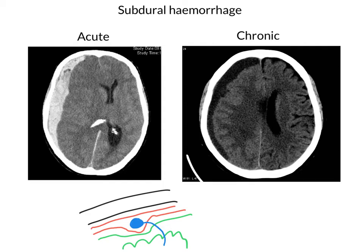There are two types of subdural hemorrhage. On the left we've got the acute subdural hemorrhage and on the right the chronic. You can tell the difference between these by the appearance of the blood. In the acute situation, the blood appears white on a CT scan, whereas in the chronic situation, the blood has been resorbed and changed by various metabolic processes and it becomes black. So the appearance of the blood on the scan tells us whether this is an acute or a chronic bleed.